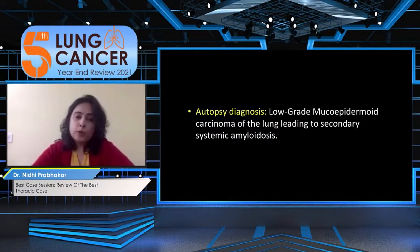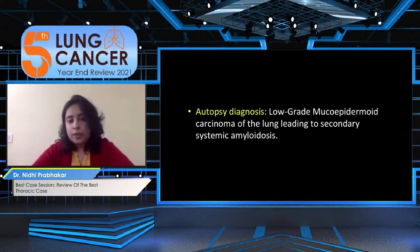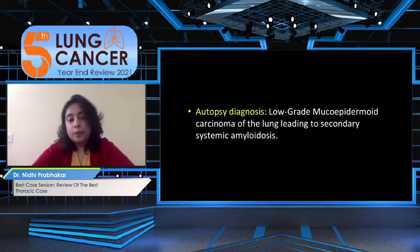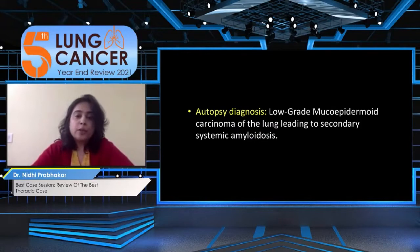The autopsy diagnosis revealed a low-grade mucoepidermoid carcinoma of the lung, which had led to secondary systemic amyloidosis. It is known that carcinoma can cause secondary systemic amyloidosis, but this is very rare — only about 20 cases reported. Lung carcinomas usually have a fast growth rate and do not lead to amyloidosis, but this low-grade mucoepidermoid carcinoma, growing very slowly, caused systemic amyloidosis and was the major cause of morbidity and mortality.